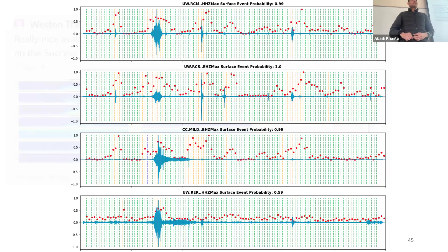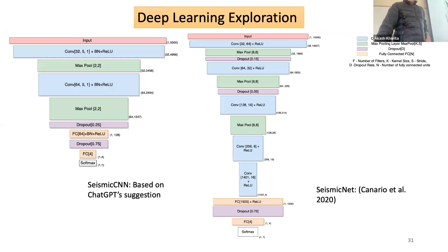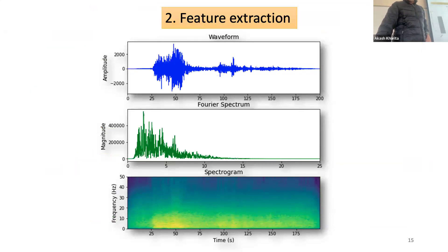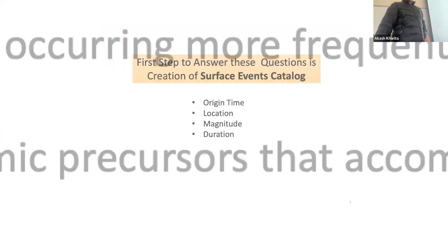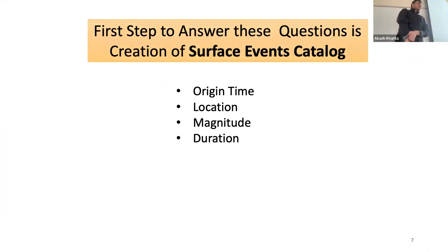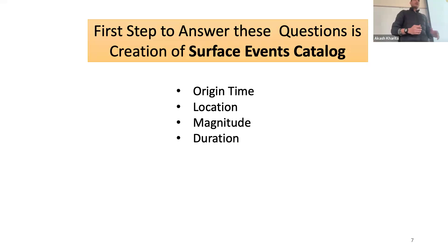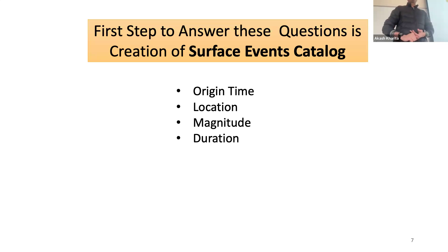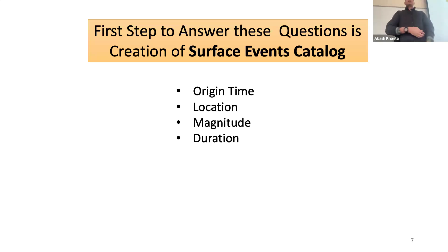Getting back to the original motivation about climate: have you noticed any trend change with your new surface event detections, or are you not looking at a long enough time span to tell? I just employed this machine learning model for three months, and we see a pattern based on precipitation, though I haven't analyzed it yet. I'm planning to run it for a longer time and hoping to find a correlation with precipitation. Month of the year is one of the features, based on the assumption that surface events show seasonality.